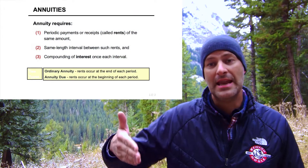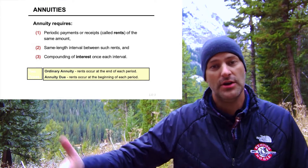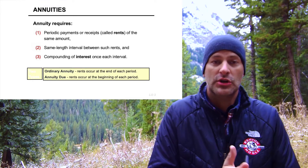The interest also has to be computed — it compounds once each interval. So if your interval is one year, interest has to compound once a year. If it doesn't, the simple calculations we're doing don't work that way; it becomes a much more complex calculation. There are two types of annuities: there's an ordinary annuity, where rents occur at the end of each period — so if I borrow money today, my first payment occurs at the end of the first period. Alternatively, it could be an annuity due, where the rents occur at the beginning of the period.